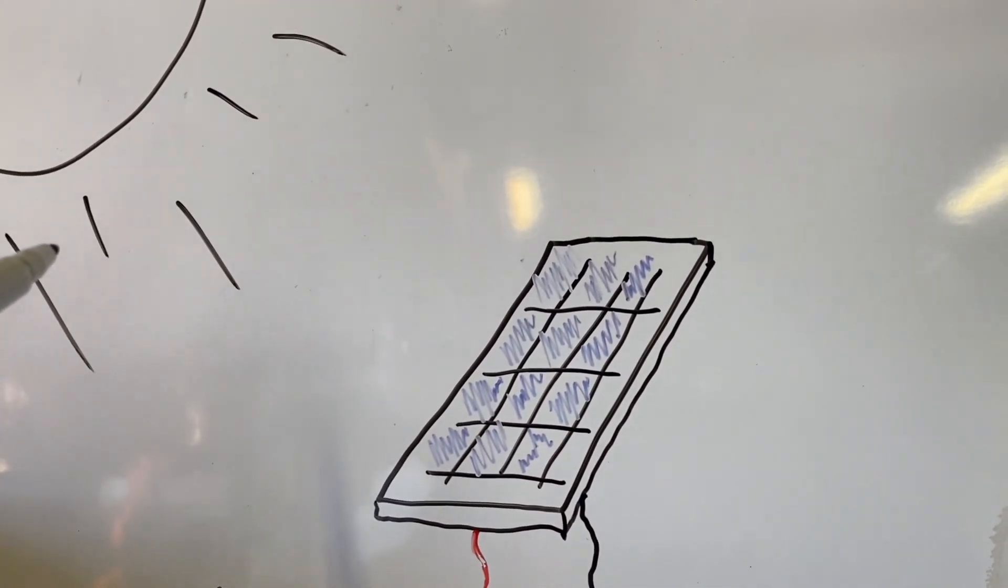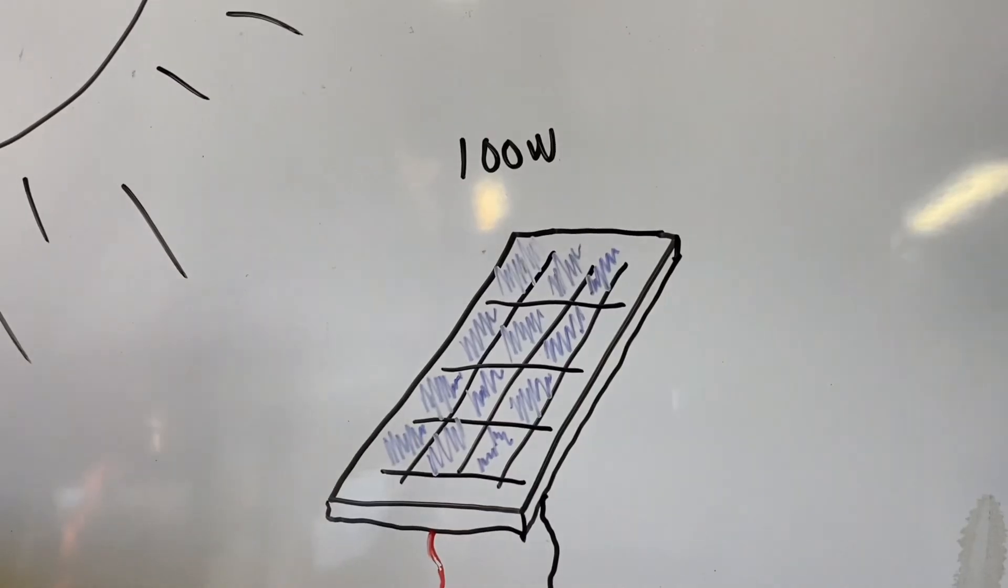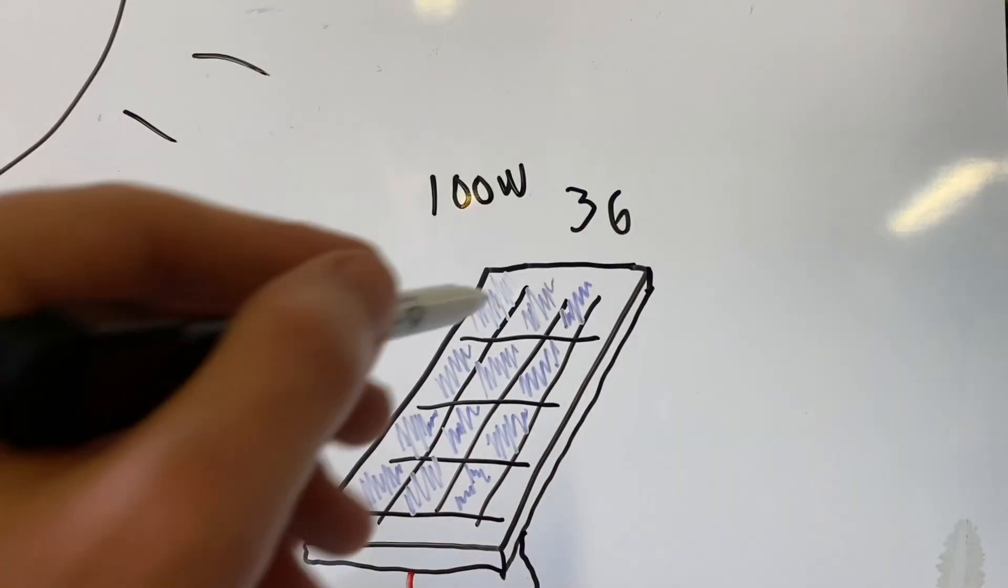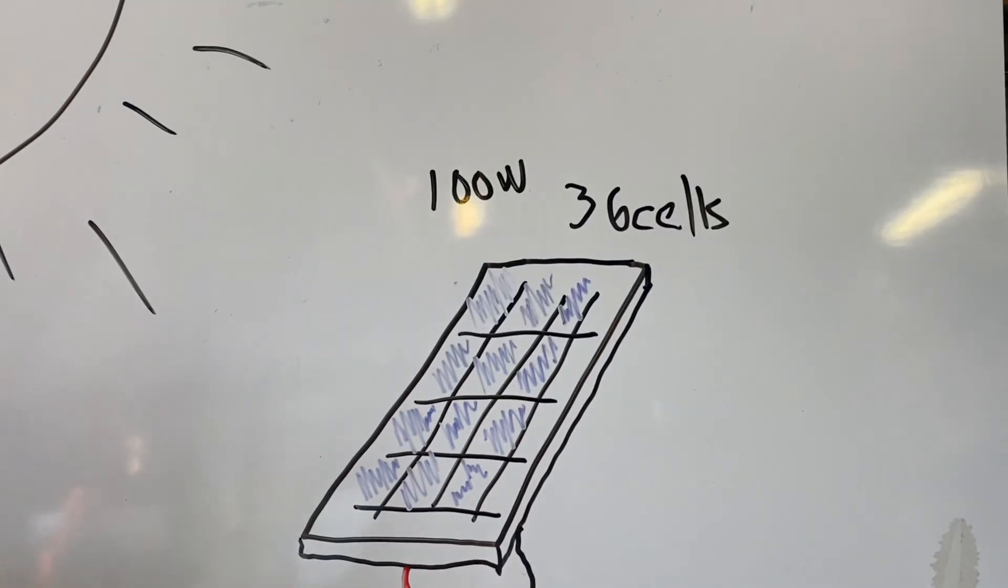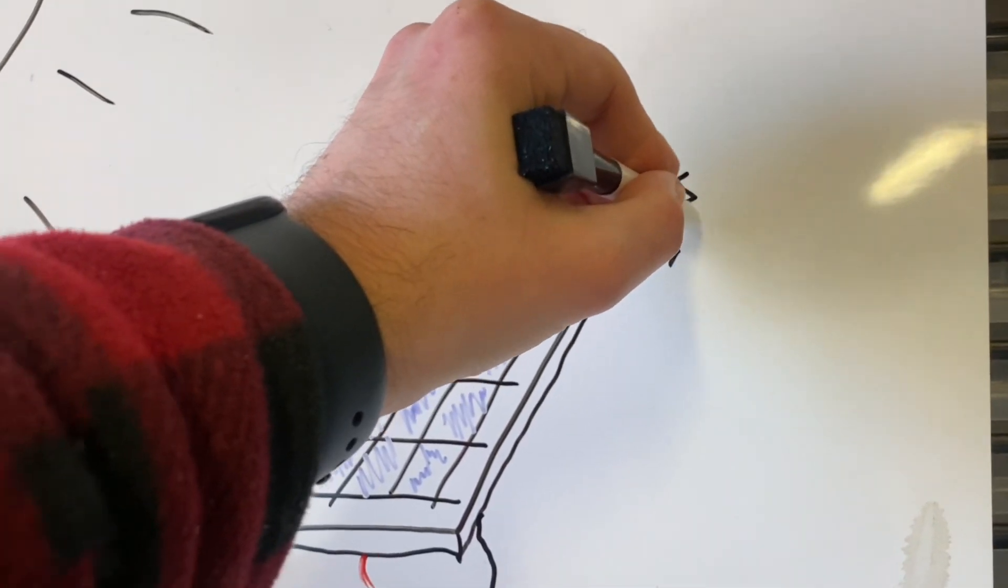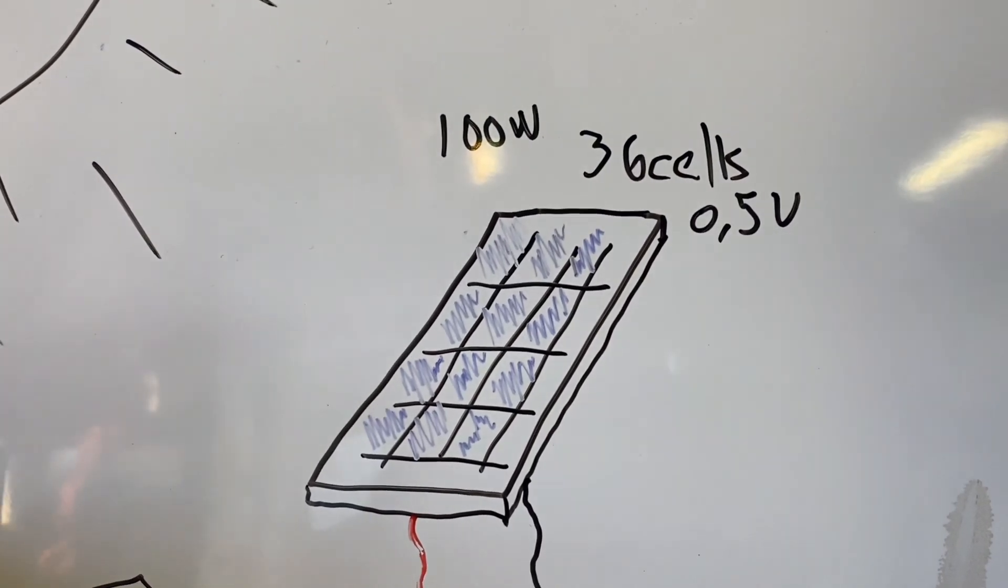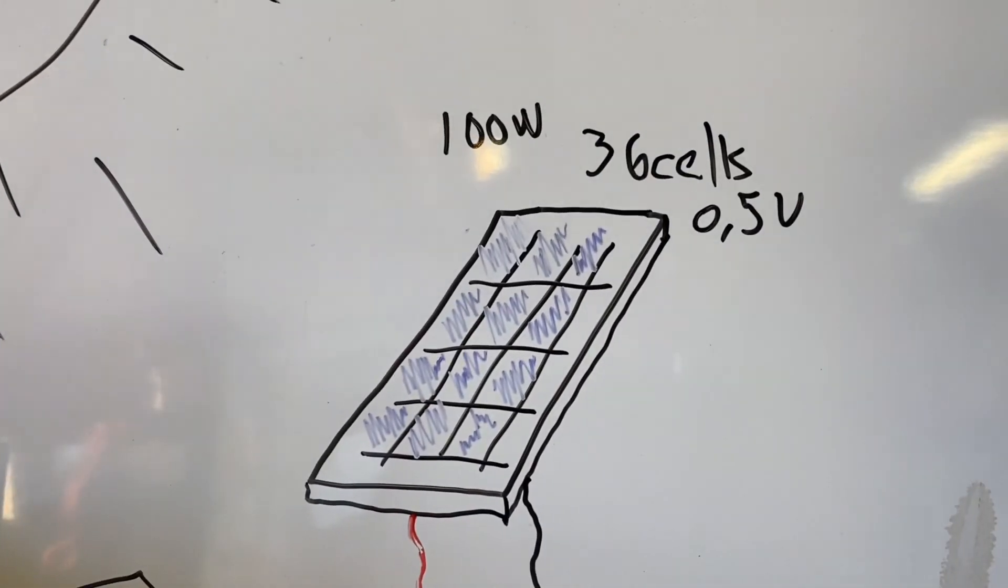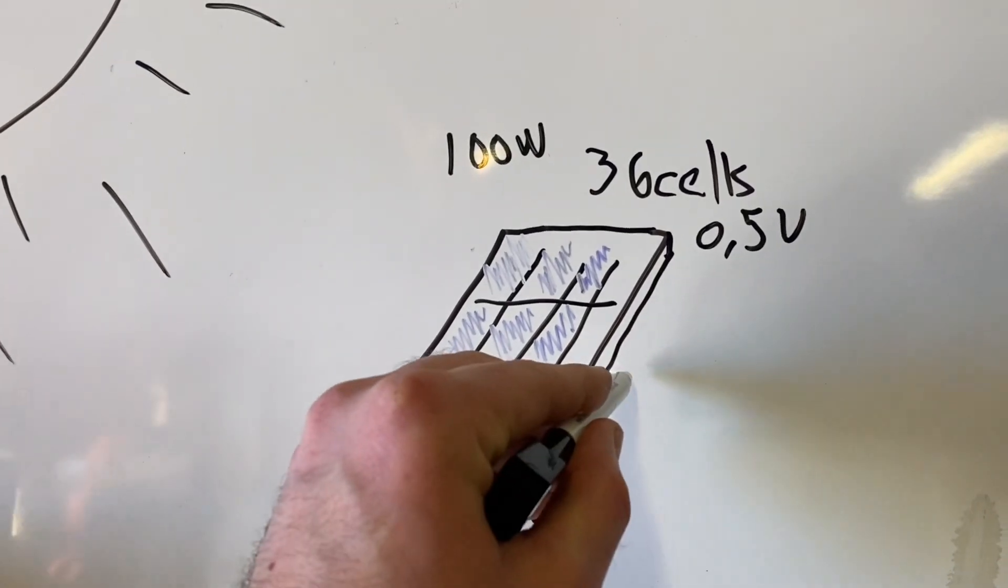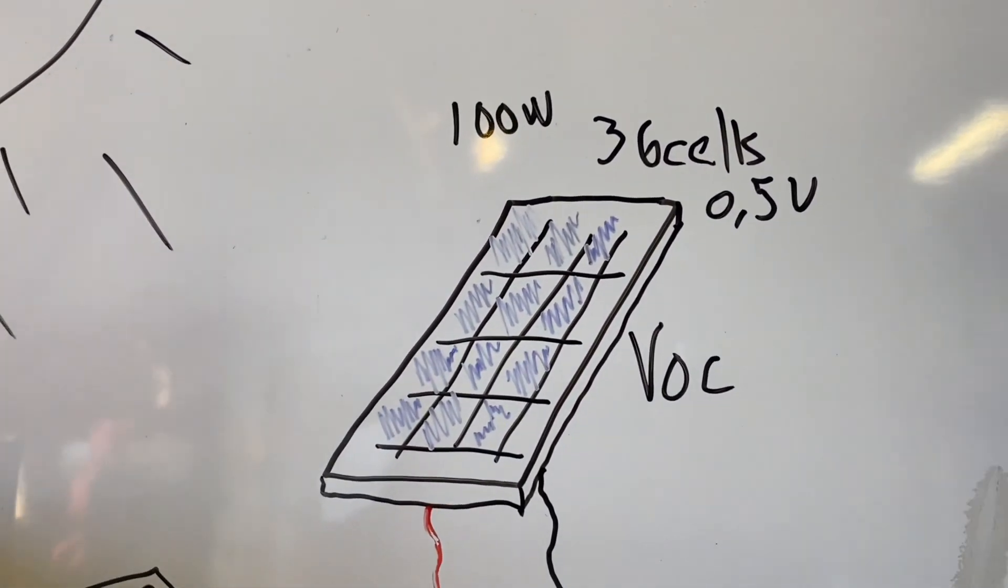This is a solar panel, this is the Sun. Now in your typical 100 watt solar panel, there are 36 cells. Each cell produces about 0.5 volts.